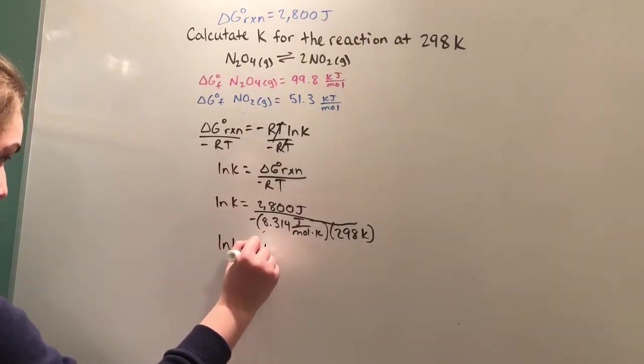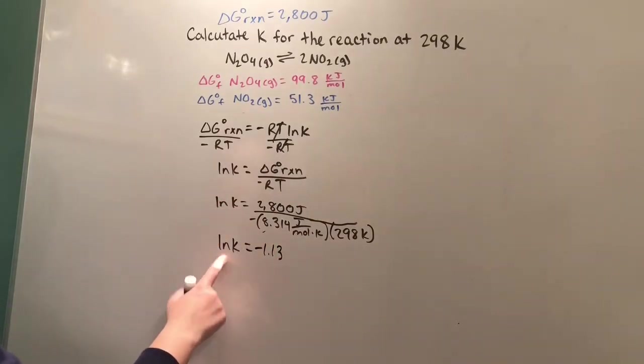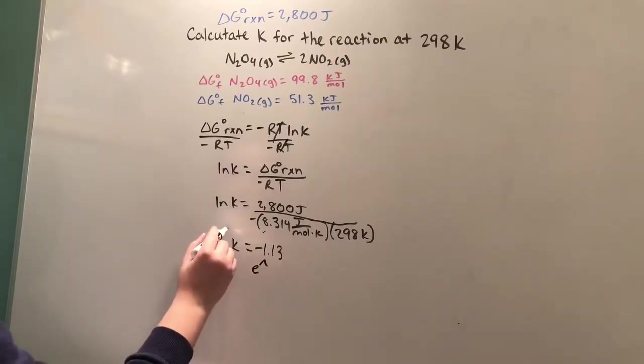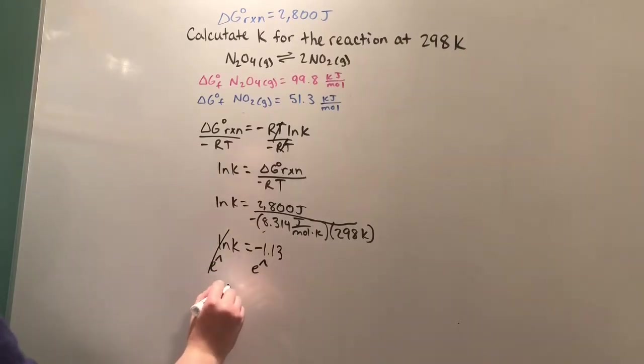Plugging this into our calculator, we get the natural log of K equals about negative 1.13. And to get rid of this natural log, we're going to have to take e raised to both sides. E raised to the ln of anything cancels out and you're left with K equals e raised to negative 1.13, and K equals 0.32.